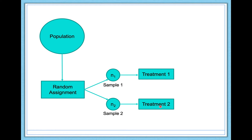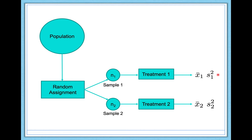Our treatments are applied between subjects. Treatment one for sample one is work out in a group twice, and treatment two for group two is work out alone twice. Then we collect sample statistics: the average and variance of anxiety for group one, and the average and variance of anxiety for group two. Note the sample statistics we're collecting: sample size, sample mean, and sample variance for two groups — six different things. This is all you need to calculate the independent samples t-test.